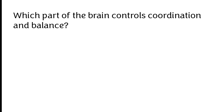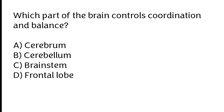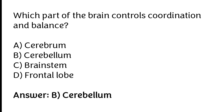Which part of the brain controls coordination and balance? Cerebrum, cerebellum, brain stem, frontal lobe. The correct answer is option B — the cerebellum controls coordination and balance.